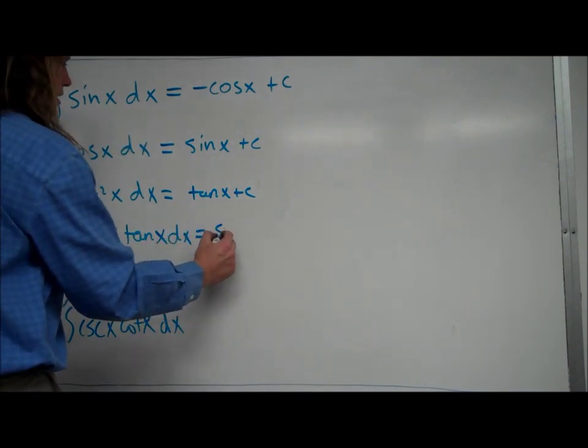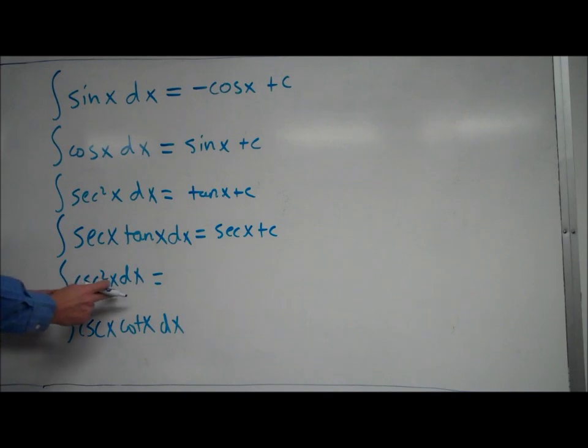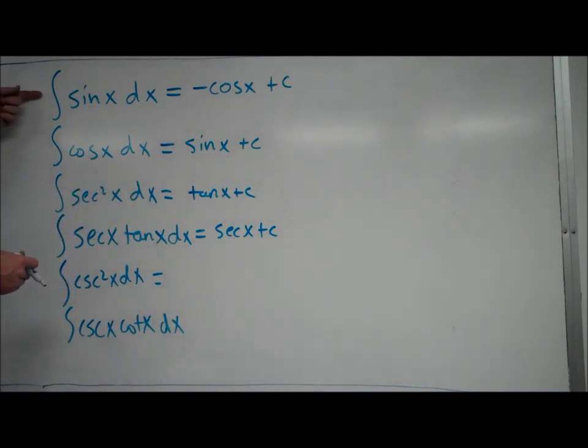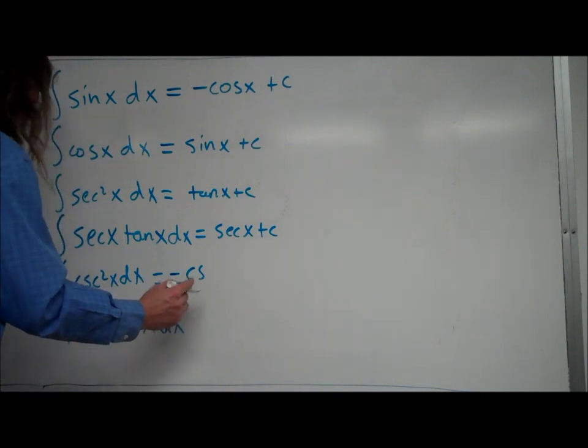The antiderivative of secant tangent x is just going to be secant x plus c. This one here, the derivative of cotangent is negative cosecant squared. So, kind of similar to this guy up here, this is going to be negative cotangent.